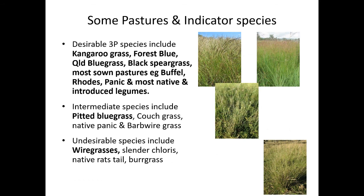When assessing a pasture we want to see a very high dominance and proportion of our desirable 3P species. Indicator species we'd be looking for include kangaroo grass, forest bluegrass, black spear grass, and most of our sown pasture species in both grasses and legumes. If we start to see slight declines in those we'll see intermediate species such as pitted bluegrass and couch and others take over. Less desirable species like wiregrass are a really good indicator of decline in our pasture and land condition health. Overall, it's the proportion of our desirable 3P species that's the really critical factor.